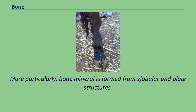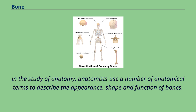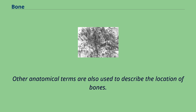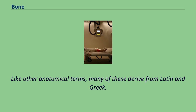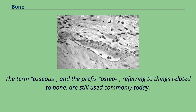There are five types of bones in the human body: long, short, flat, irregular, and sesamoid. In the study of anatomy, anatomists use a number of anatomical terms to describe the appearance, shape, and function of bones. Many of these derive from Latin and Greek. The term osseous and the prefix osteo-, referring to things related to bone, are still used commonly today.